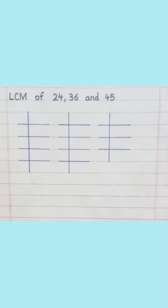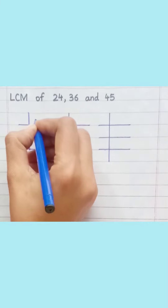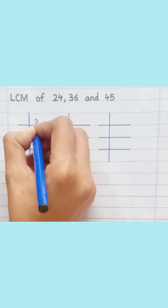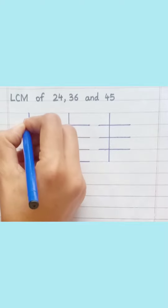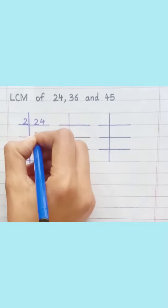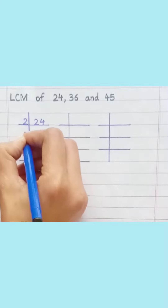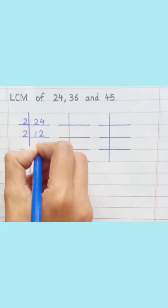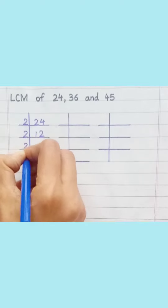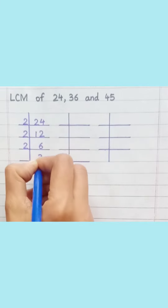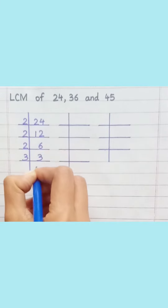24: 2 1s are 2, 2 2s are 4, 2 6s are 12, 2 3s are 6, 3 1s are 3.